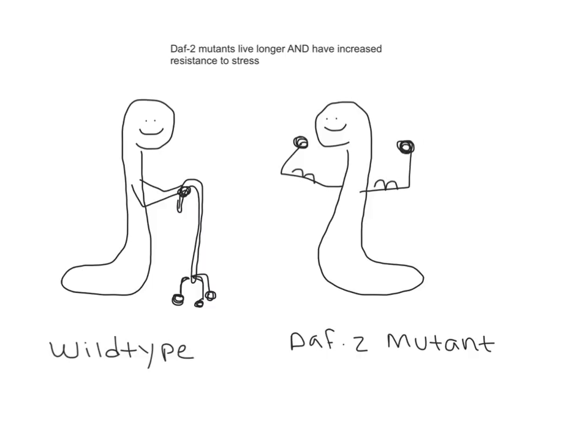In conclusion, the DAF2 mutants not only live longer, but also have increased resistance to stress. These findings, along with other studies, suggest that the DAF2 mutations may delay the onset of age-related diseases or outcomes to stressful environmental conditions.